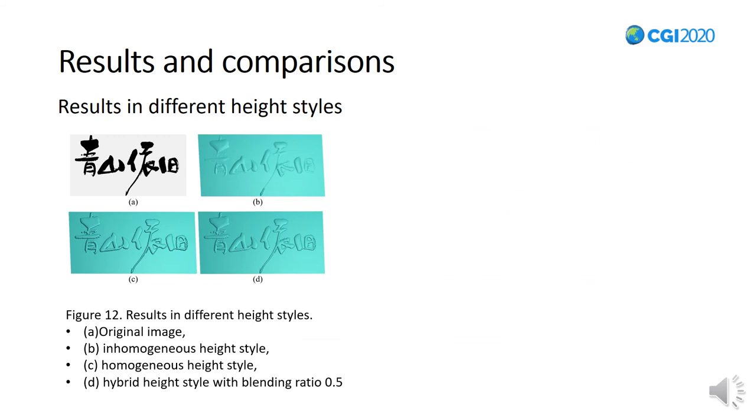In our modeling framework, the final calligraphy relief is achieved by combining the two types of height views together. Figure 12 shows several results with different blending ratios.